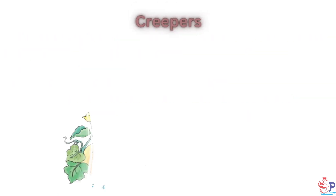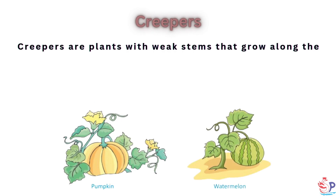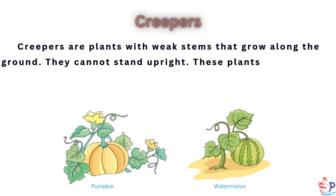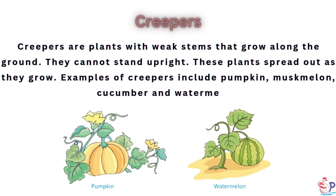Creepers are plants with weak stems that grow along the ground. They cannot stand upright. These plants spread out as they grow. Examples of creepers include pumpkin, muskmelon, cucumber and watermelon.